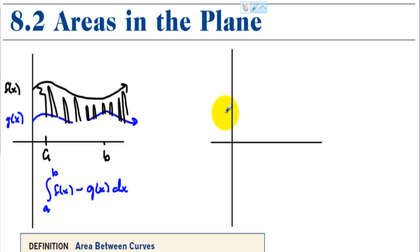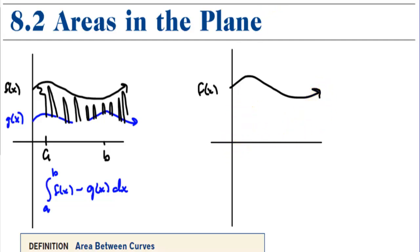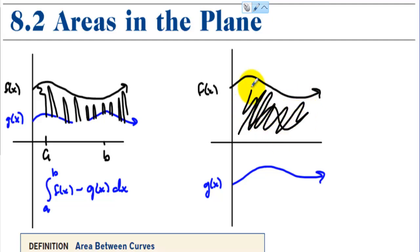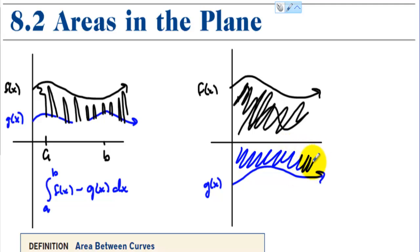Now what if we have a slightly different situation — what if f was always positive and g was always negative? We'd have all of this area under f, and then we'd have to add on all of the area under g, which is now going to be negative.